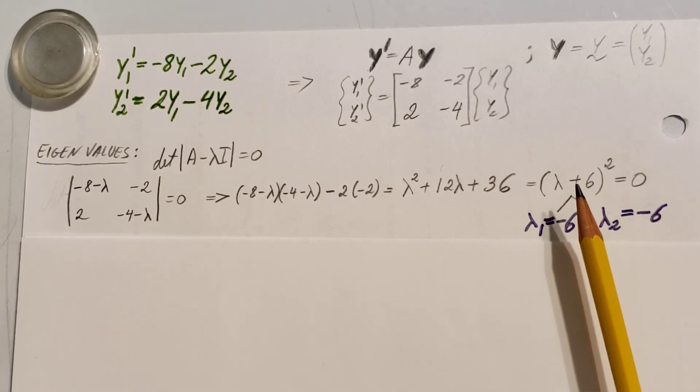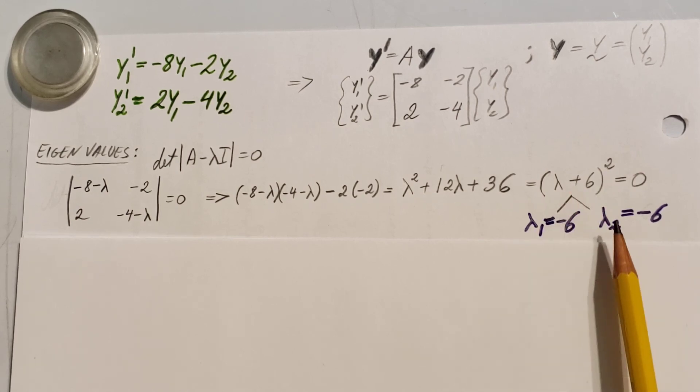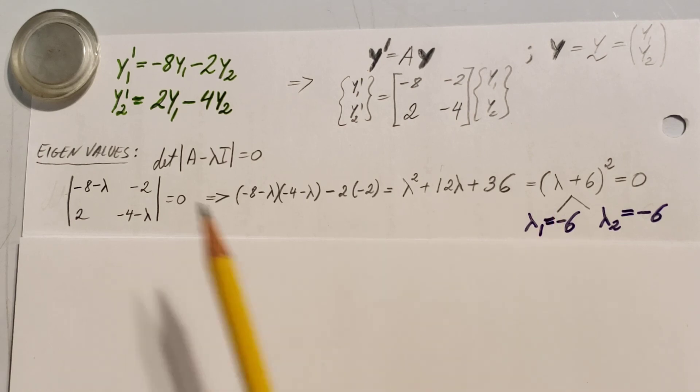From here, we can see that our two roots for this equation will be lambda 1 equals negative 6, lambda 2 equals negative 6. Therefore, we have one eigenvalue with a multiplicity of 2.